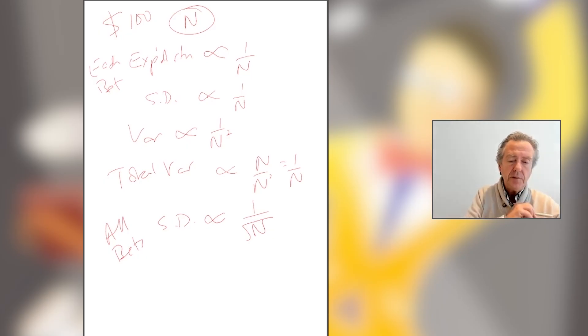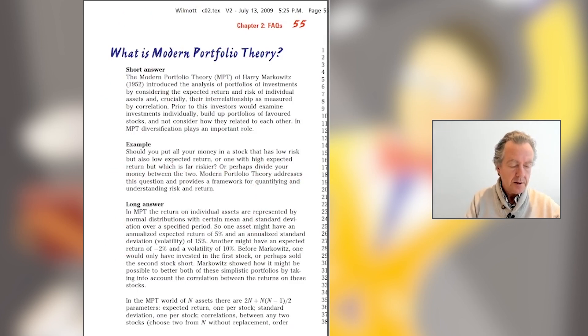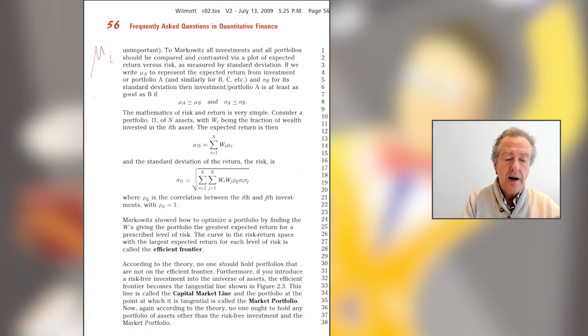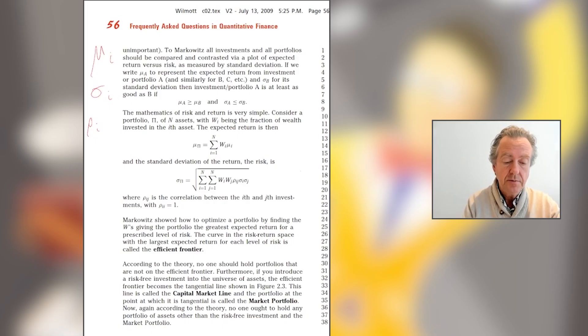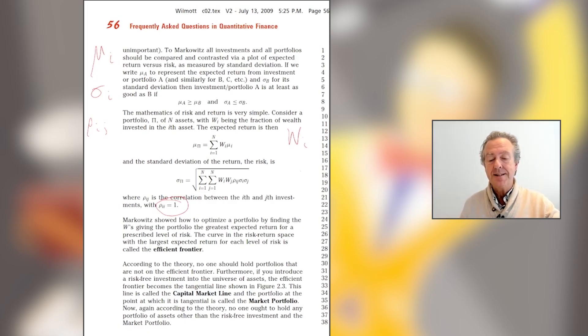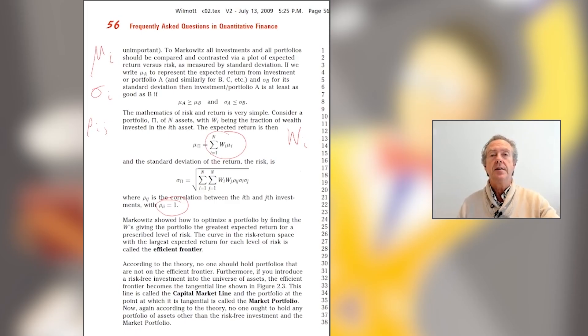So if you've got independent coin tosses, as n gets larger and larger, the risk decreases and you converge to the expected return. How does that apply in finance? We have μ_i as the expected return for stock i, σ_i as the standard deviation of the return for stock i. We have correlation ρ_ij between two stocks, a number between minus 1 and plus 1, and of course ρ_ii equals 1. And w_i is the fraction we invest in stock i. The expected return is just the weighted sum of all the individual expectations.